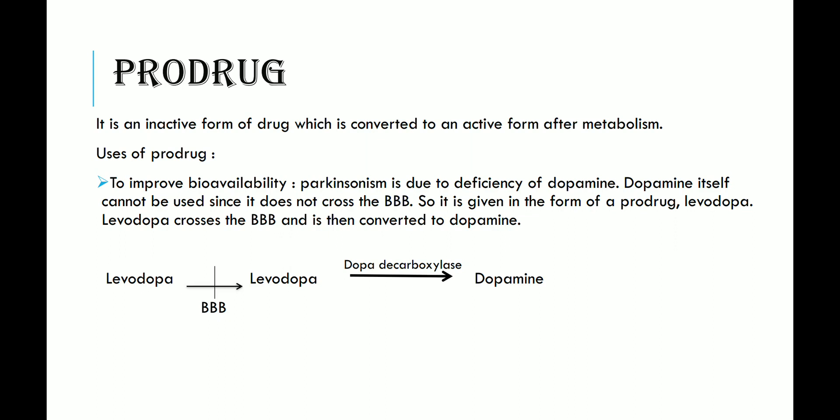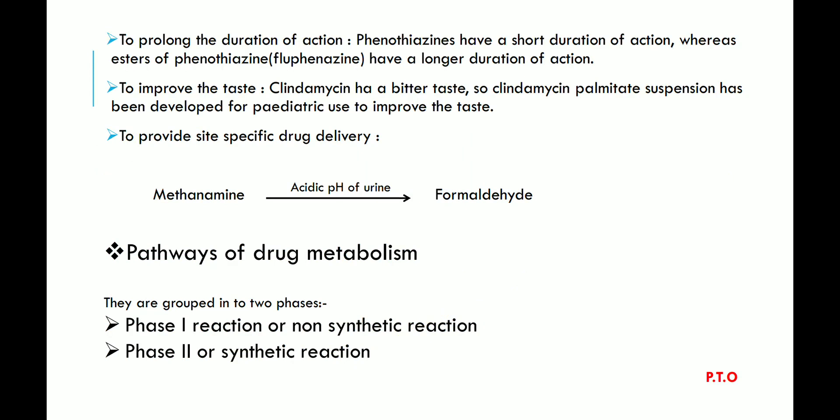For example, Parkinsonism is due to deficiency of dopamine. Dopamine itself cannot be used since it does not cross the blood-brain barrier. So it is given as the prodrug levodopa. Levodopa crosses the blood-brain barrier and is then converted into dopamine with the help of the enzyme dopa decarboxylase. Prodrugs are used to prolong the duration of action, improve taste, and provide site-specific drug delivery.